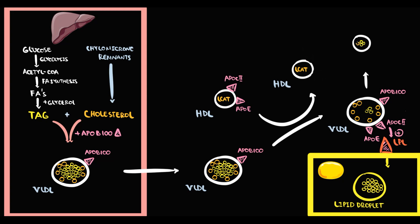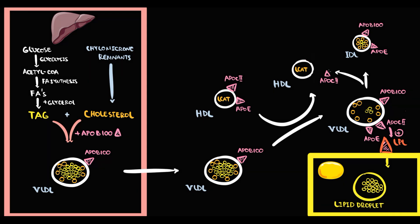With the loss of such a large portion of triacylglycerols, the lipoprotein particle becomes significantly smaller. Also with detachment, VLDL loses ApoC2, since once this process is finished they no longer need this apoprotein. Such a particle with only two apoproteins on its surface — ApoB100 and ApoE — we call intermediate-density lipoprotein, or IDL. ApoC2 simply returns to HDL.